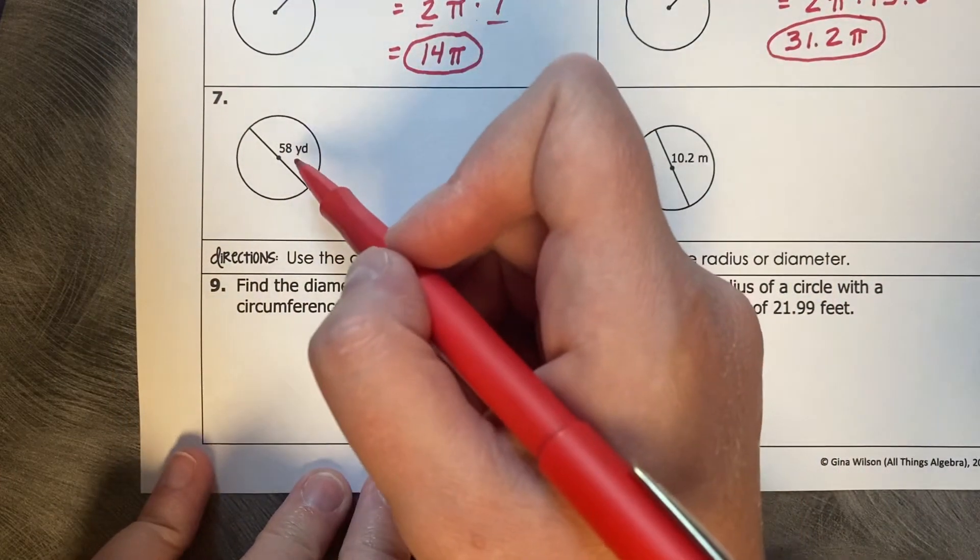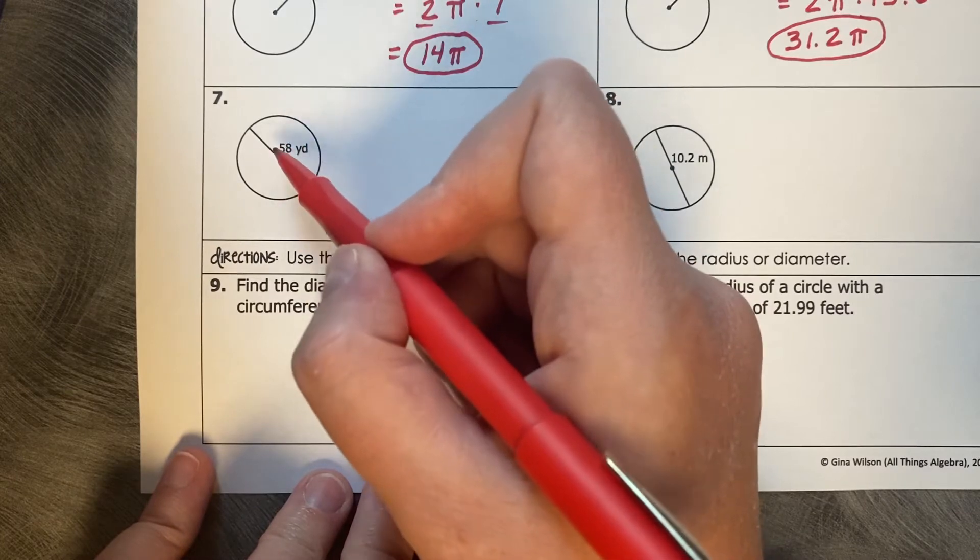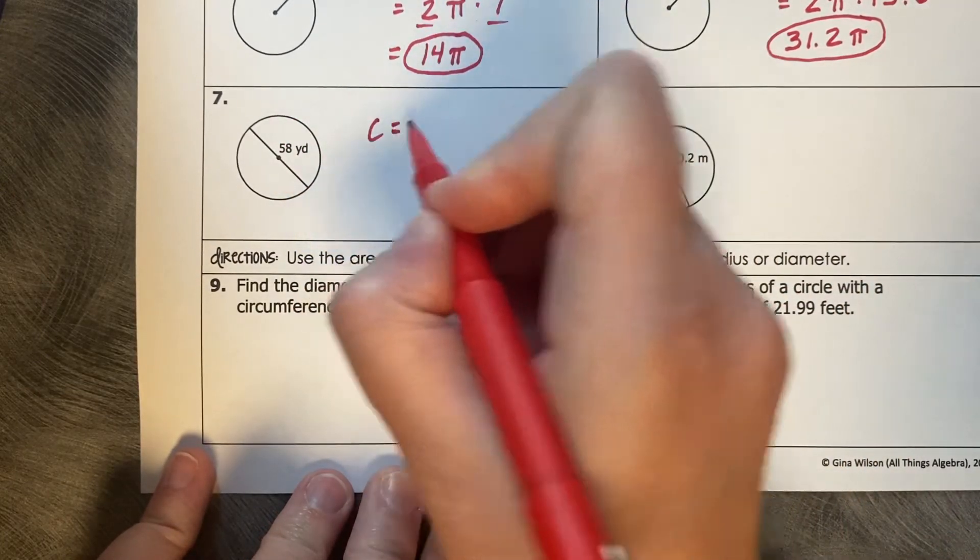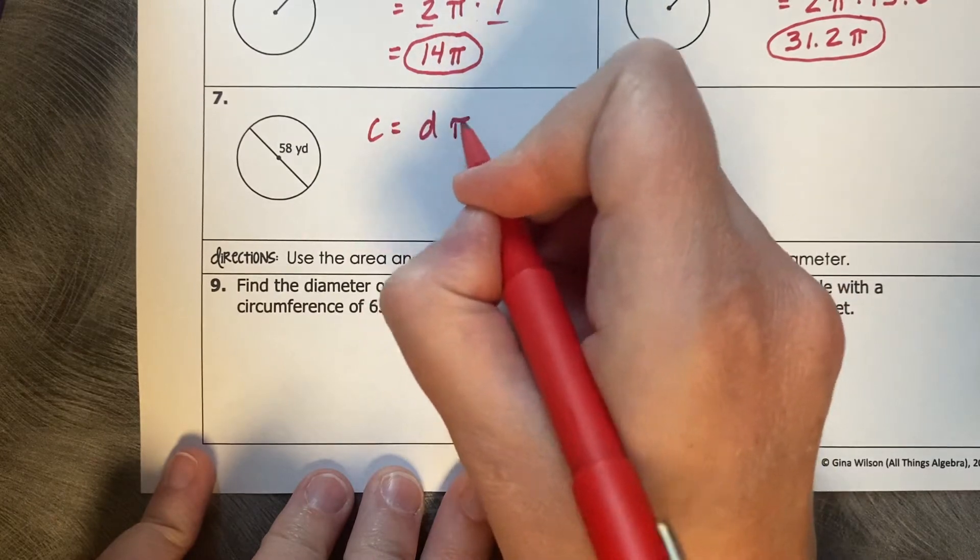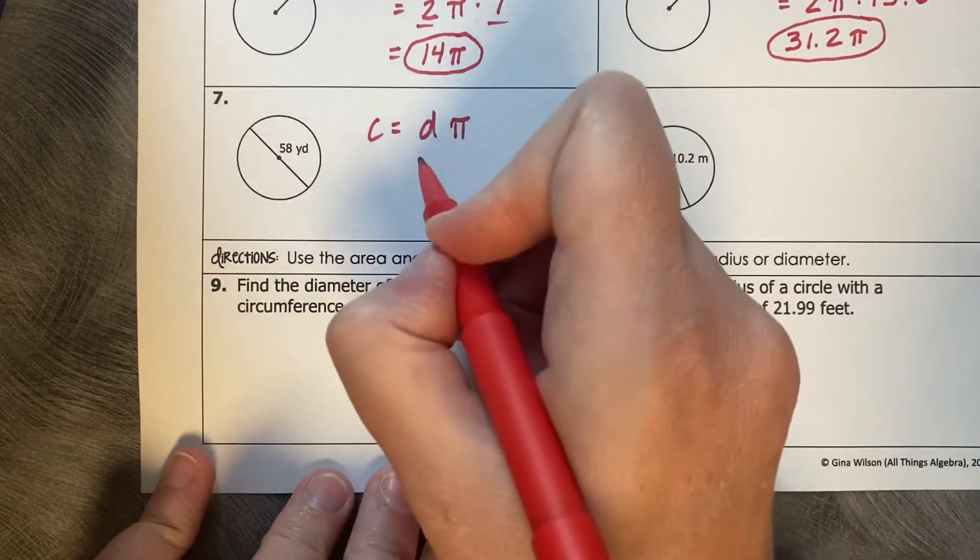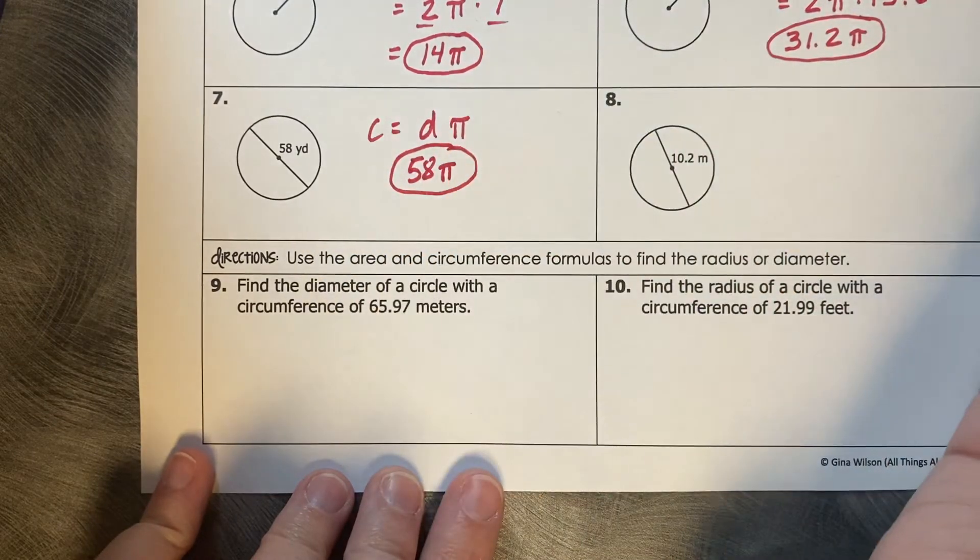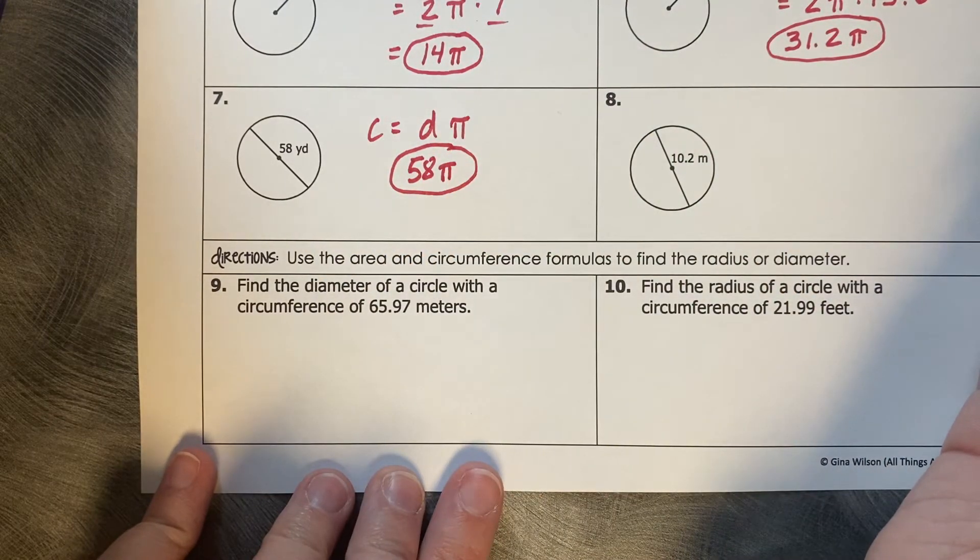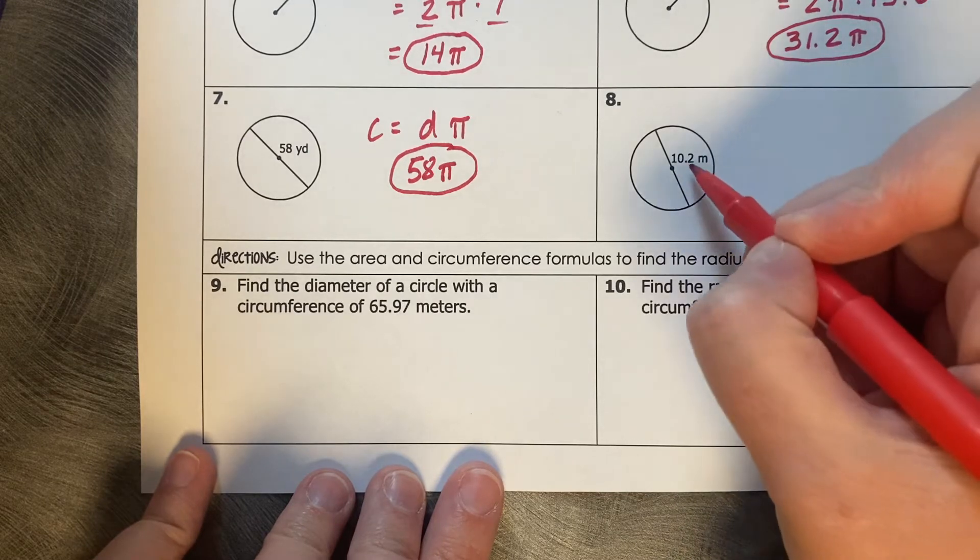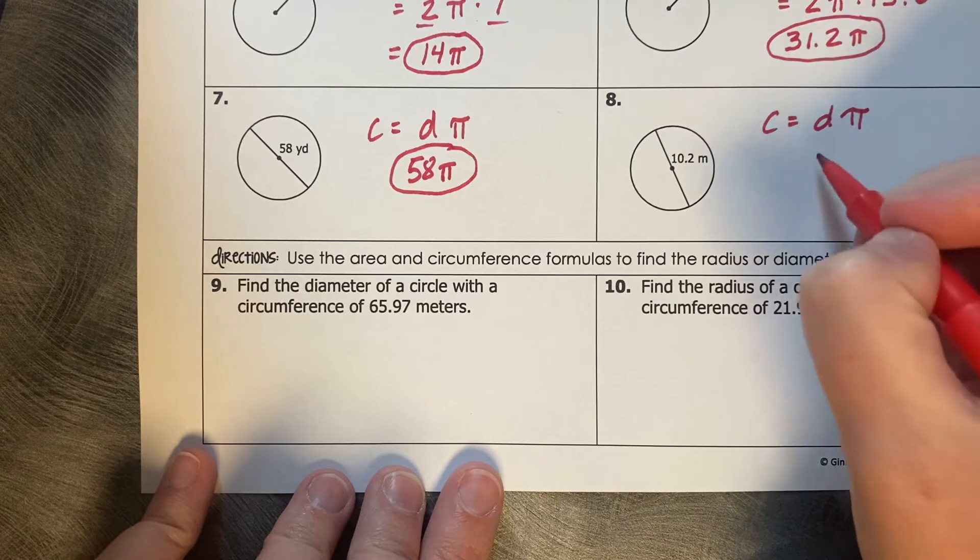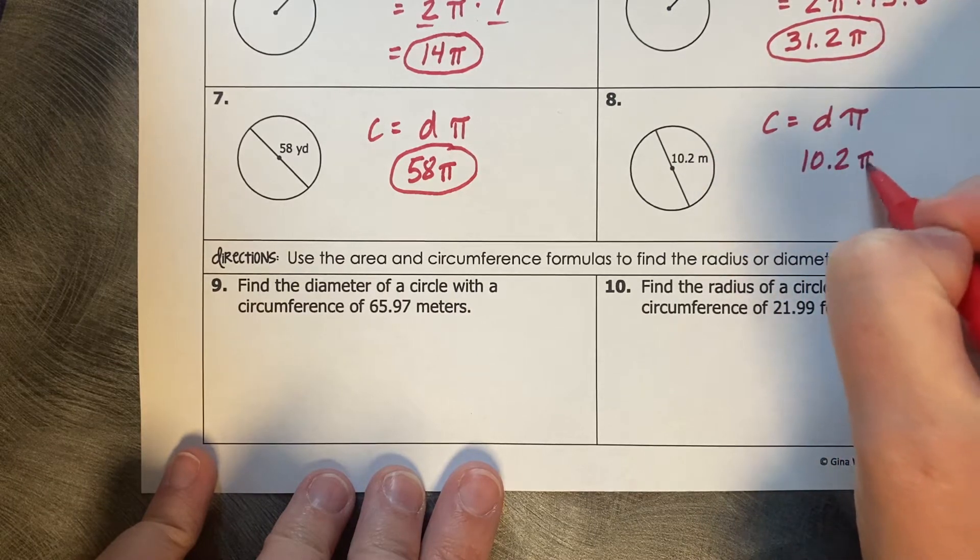On these ones, they give you a diameter. So instead of cutting it in half and getting a radius and then multiplying it by 2, we can use the diameter times pi portion of it. So the diameter is 58, so the circumference is 58 pi. Again, I've given a diameter so I can use diameter times pi. So that's going to be 10.2 pi.